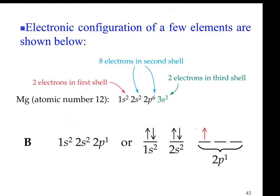To write the electron configuration for magnesium — look at the periodic table, you see number 12, which means 12 electrons. Start by placing two electrons in 1s, then go to next higher energy level 2s with two. Next, you go to 2p — P orbitals come as a triplet, three orbitals can accommodate six. So far we have 2+2+6 = 10. Out of 12, two electrons are left, and the next higher energy orbital is 3s. So two electrons sit on 3s. This is the complete electron configuration for magnesium: 1s²2s²2p⁶3s².